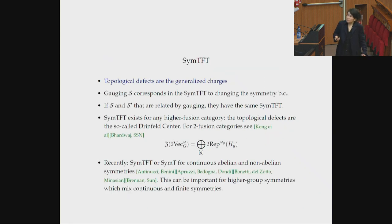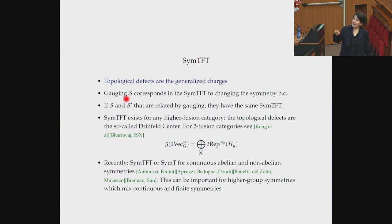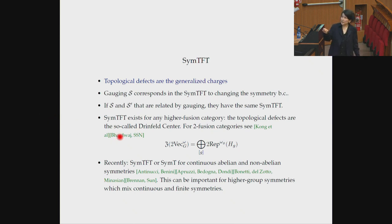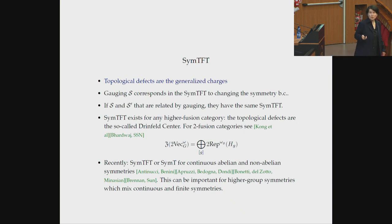To summarize: the SymTFT has topological defects corresponding to the generalized charges. Gauging corresponds to changing boundary conditions. If two symmetries are related by gauging, they have the same SymTFT — at least in the two-dimensional setting. This construction exists for any higher fusion category. Concretely for a two-fusion category with a group-like symmetry, possibly with an anomaly, there's a concrete decomposition in terms of two-representation categories of stabilizers. There's also recent work at KITP on extending the SymTFT to continuous symmetries.